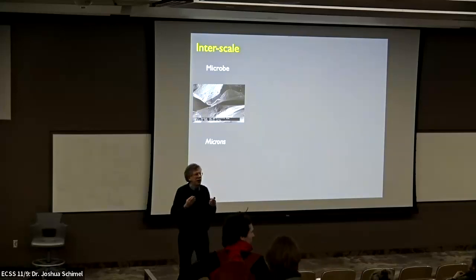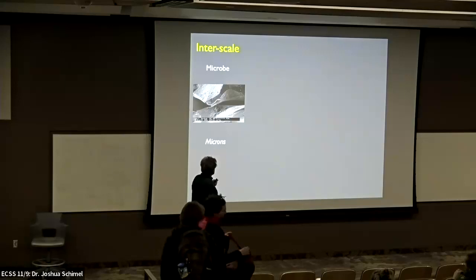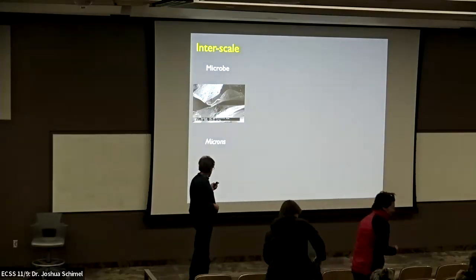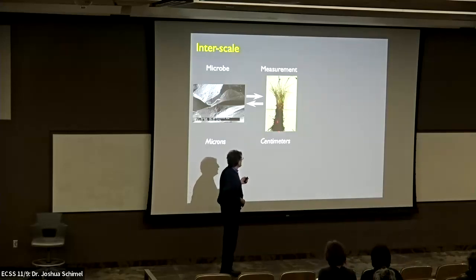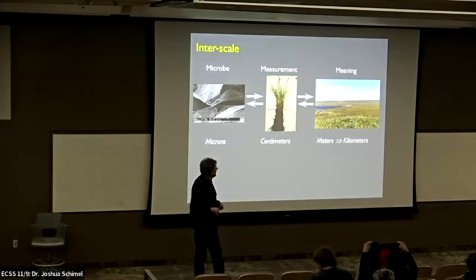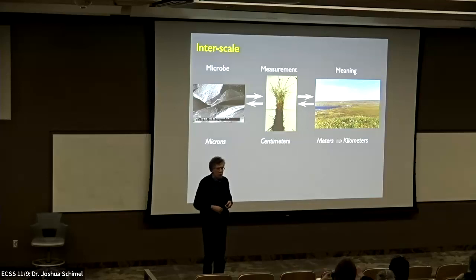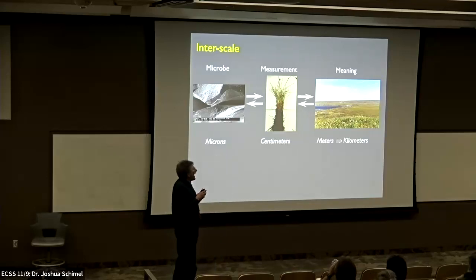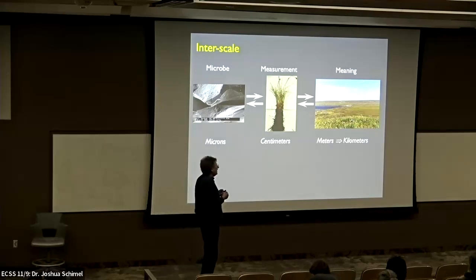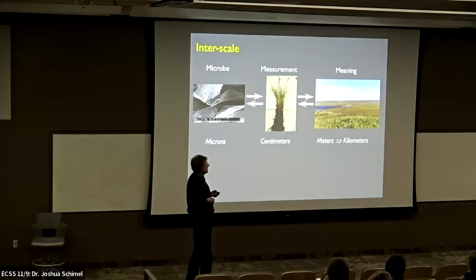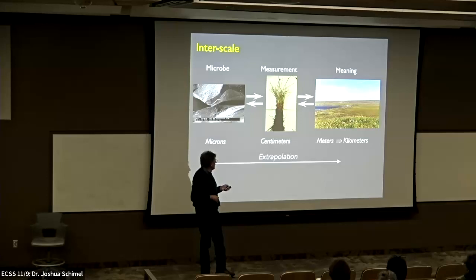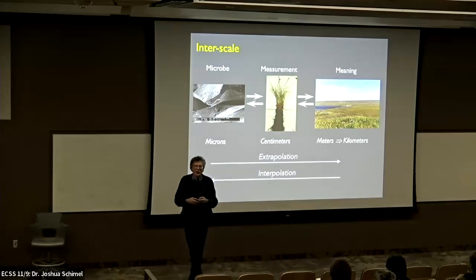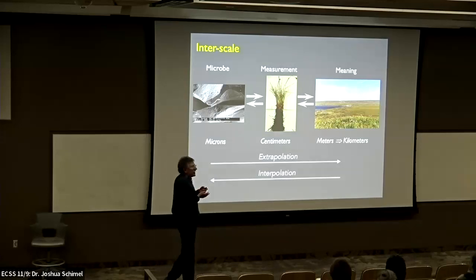I'm very interested in scale in soil processes and in bridging scales — from the microbial scale down at the level of microns to the scale we actually take samples at, usually a soil core, all the way up to ecosystems. How do we use information from one scale to inform us about what's going on at other scales? To go from microns to meters we use extrapolation techniques; the other way, interpolation techniques.